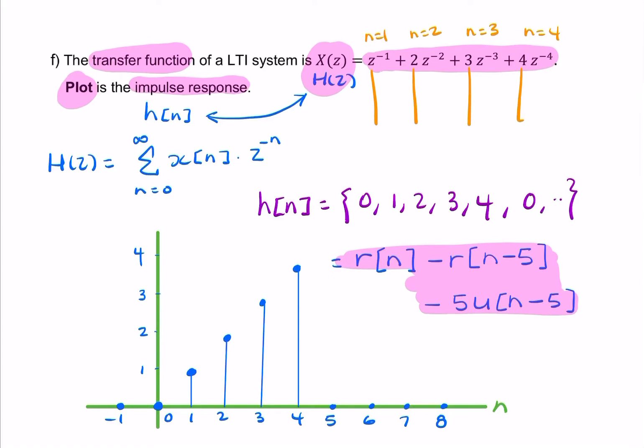So we started with the transfer function. We used the definition backwards to find the impulse response. And then we made a discrete time sketch of the impulse response.